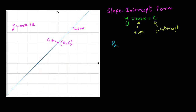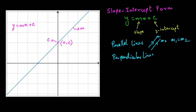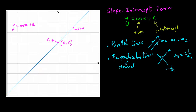Special rule for gradient — parallel lines: if two lines are parallel, they have the same gradient, so m1 equals m2. In case of perpendicular lines — also known as normal lines — the relationship is different. If one line has gradient m, the perpendicular line has the negative reciprocal of m. So if m1 is the gradient of one line, the other is the negative reciprocal. For example, if one line has gradient 2, a parallel line also has gradient 2, but a perpendicular line has gradient minus 1 over 2.